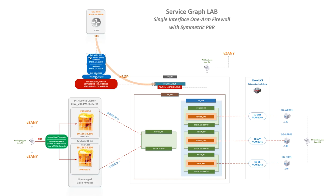BGP is running and connectivity is out to the WAN — if you want to test internet, it's all available. All these bridge domains are mapped to this layer 3 out, so their subnets are being advertised out to the core, and other routes are being advertised back into the SG VRF routing table.